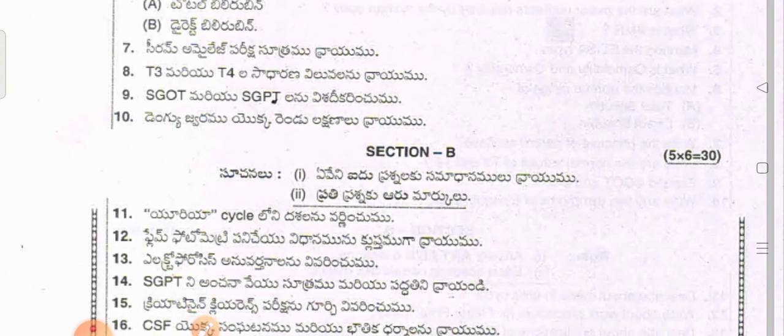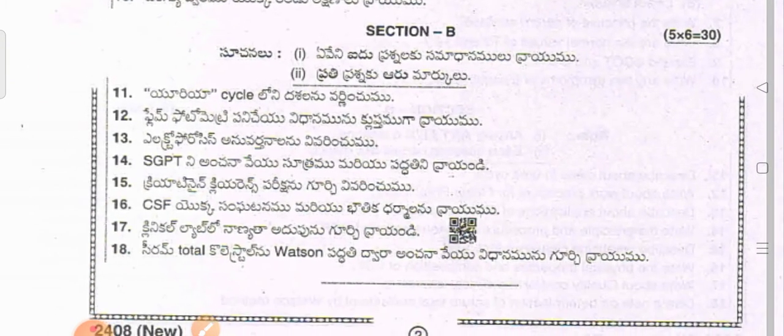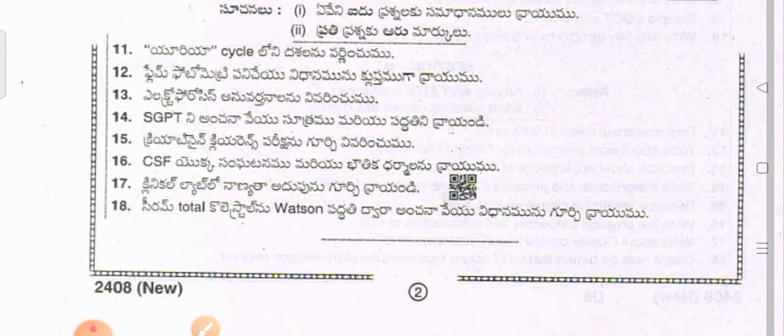Expand SGOT and SGPT. Write two symptoms of dengue fever. Section B: Answer any five questions; each question carries marks. Describe the steps of the urea cycle.